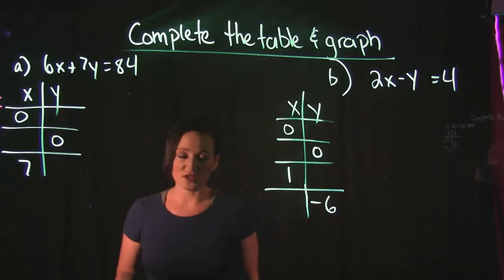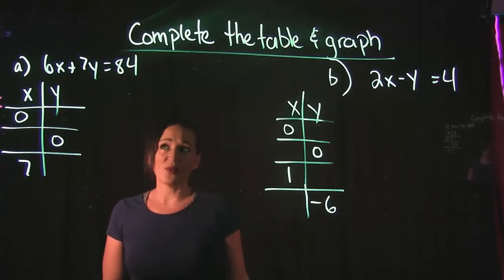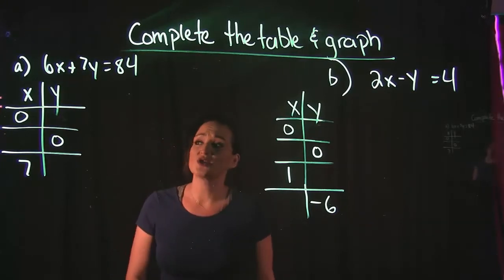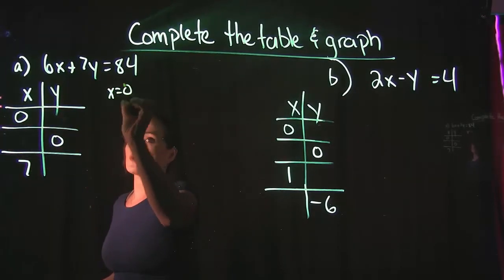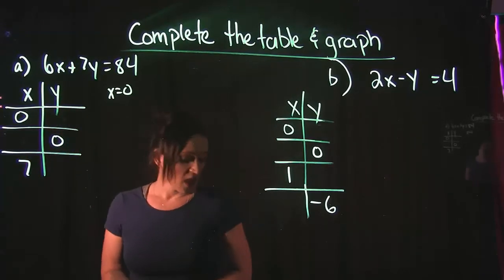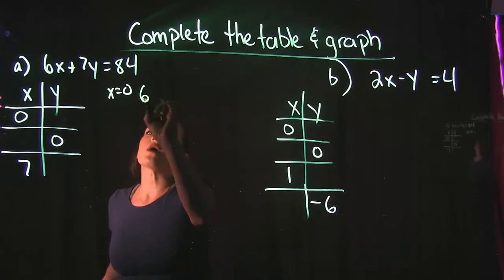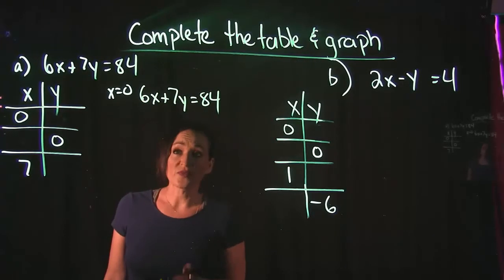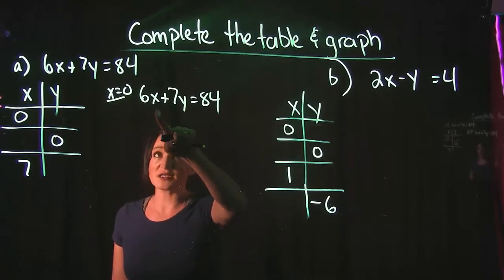This is one of the first techniques used to graph a line. Our equation for example A is 6x + 7y = 84. We're going to start with our first value: X is equal to 0. When X equals 0, we need to figure out the Y value, and we find that by substituting into our equation. We plug in 0 for X and solve for Y.